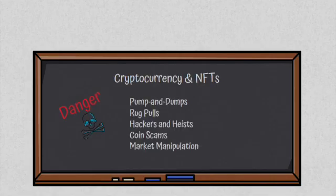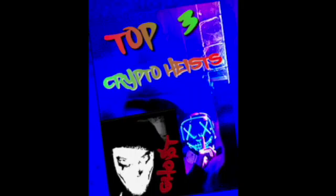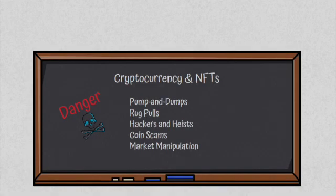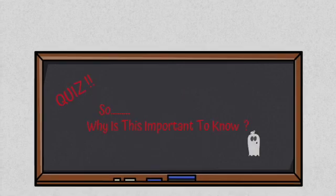So here's the bad and the ugly. Cryptocurrencies and NFTs have their own world of corruption, instability, and volatility. You can find plenty of pump and dumps, rug pulls, hackers and heists, coin scams, bogus NFT projects promoted by popular influencers that get abandoned, and always market manipulation.